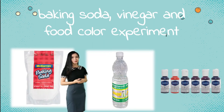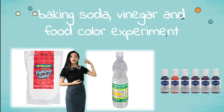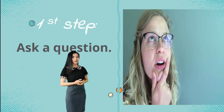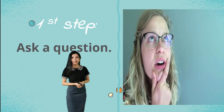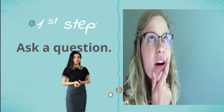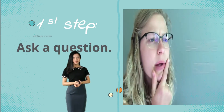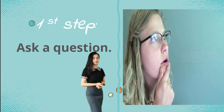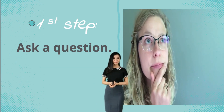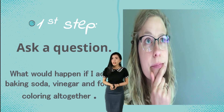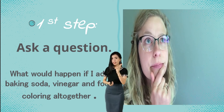Let's go through an example using the baking soda, vinegar, and food coloring experiment. The first step is ask a question. Watching the video: I wonder what would happen if I add baking soda, vinegar, and food coloring all together. She is curious about what will happen if we put these three things together — that was the question.